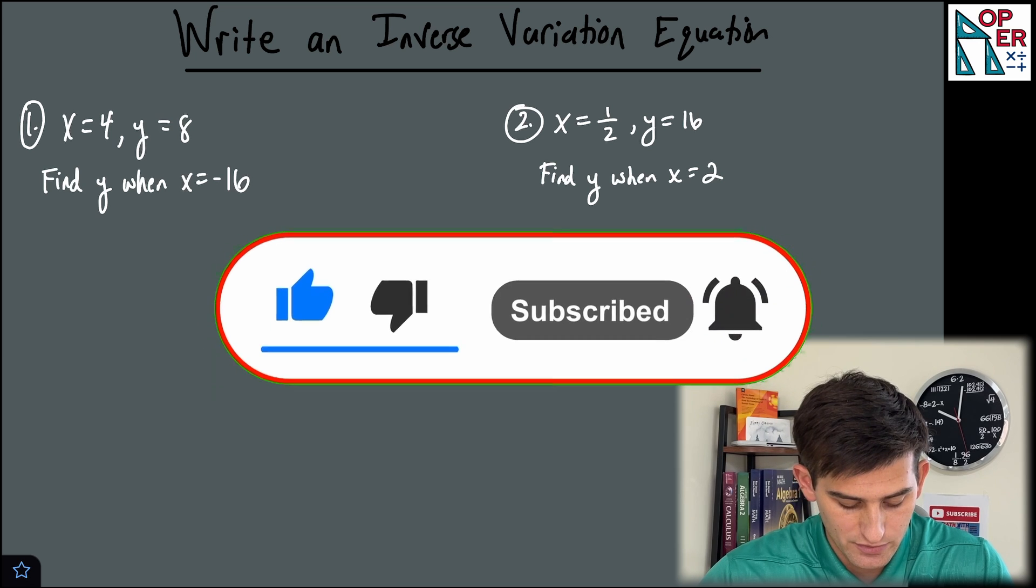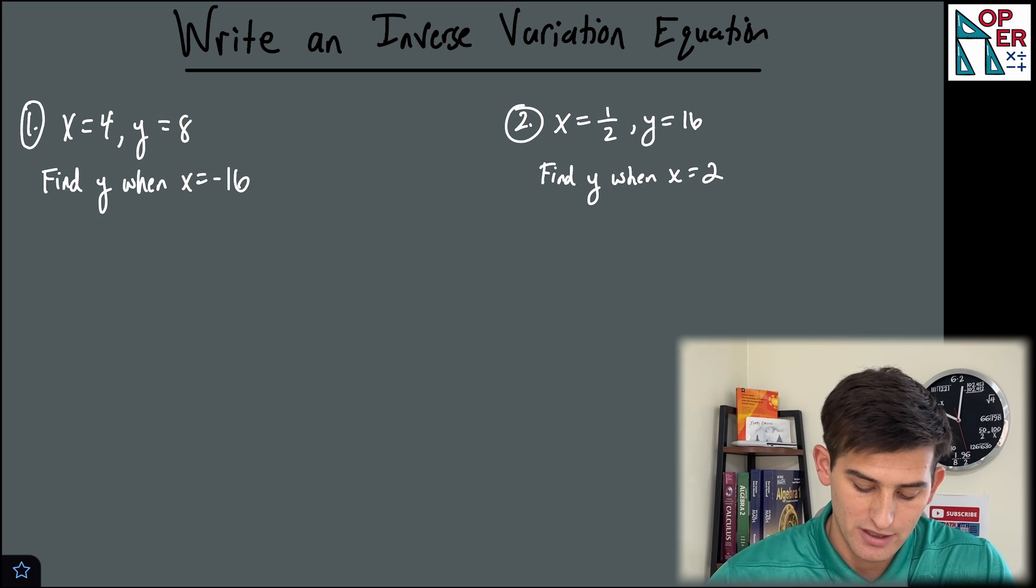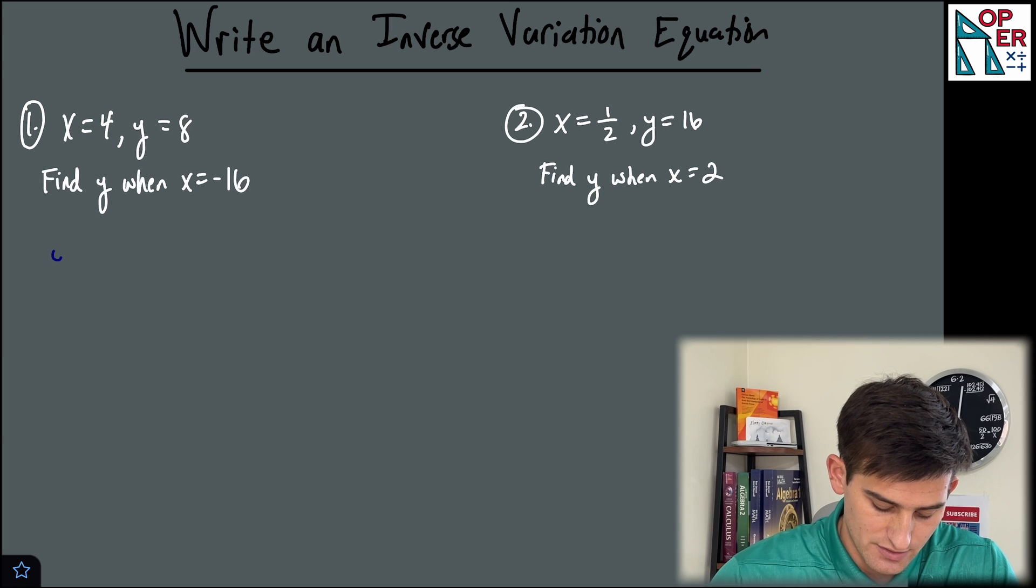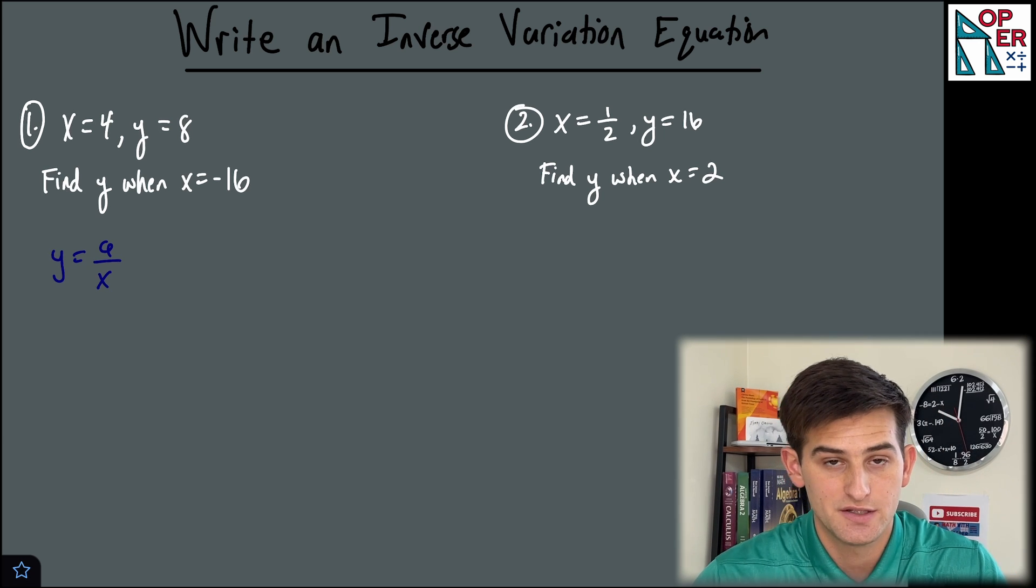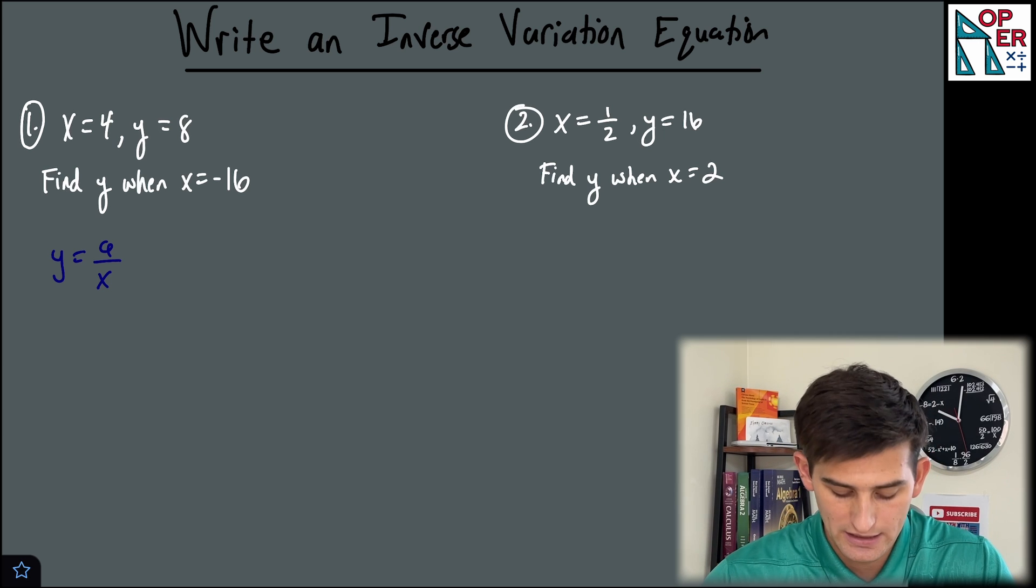So for number one, we have x is equal to four, y is equal to eight. We wanna find y when x is equal to negative 16. So remember our inverse variation equation looks like this, y is equal to a divided by x. So now one way we can do this is plug in our values for x and y to figure out what a is.